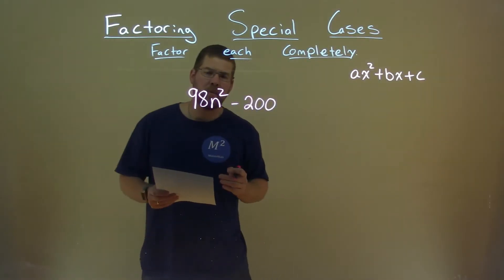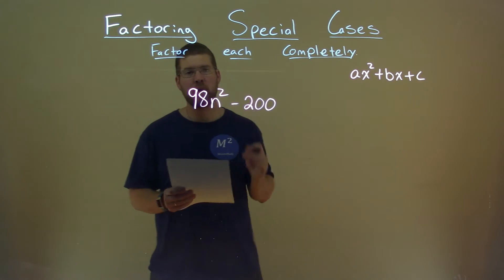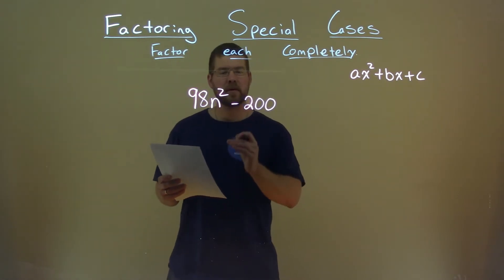We're given this problem right here, 98N squared minus 200, and we want to factor this completely.